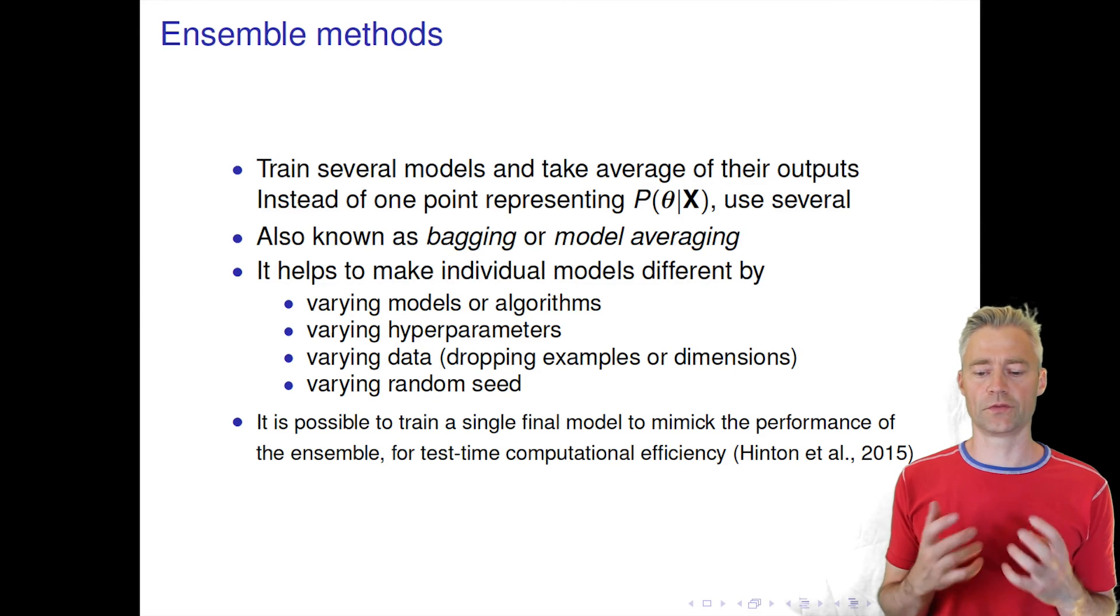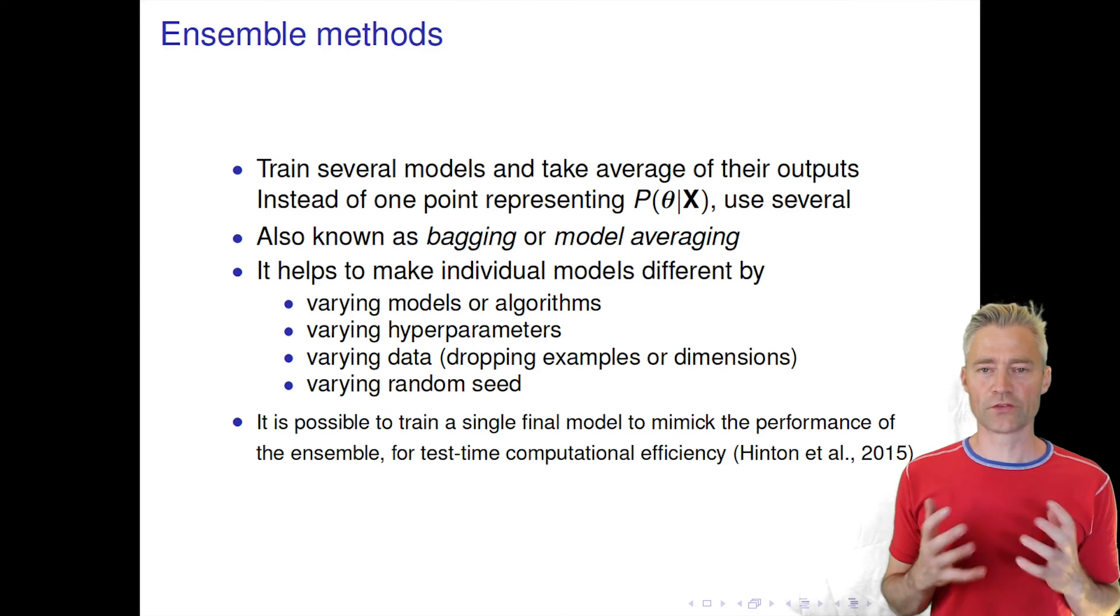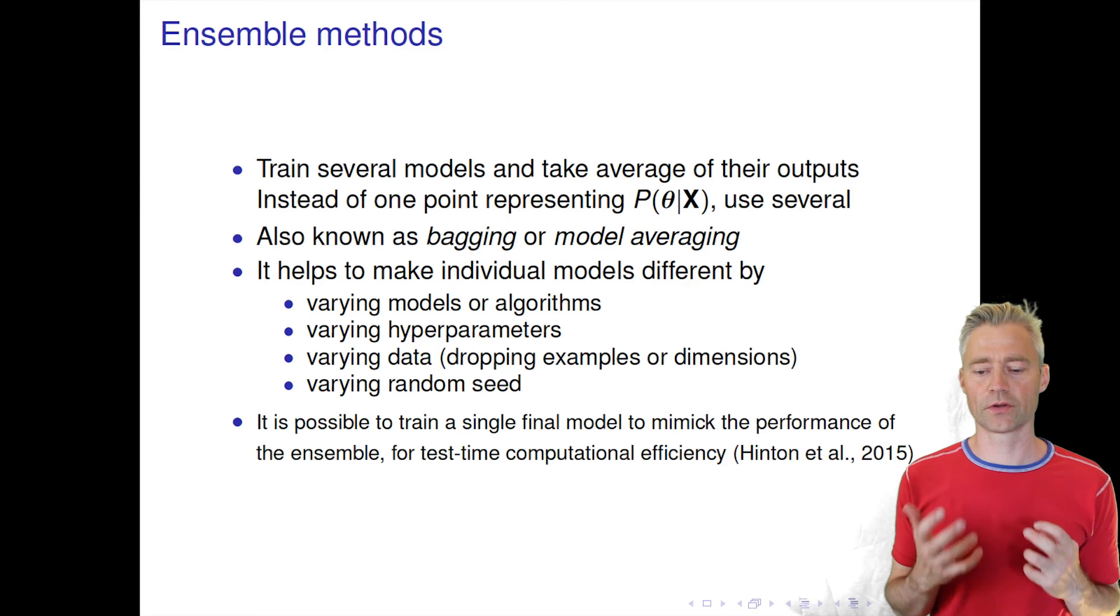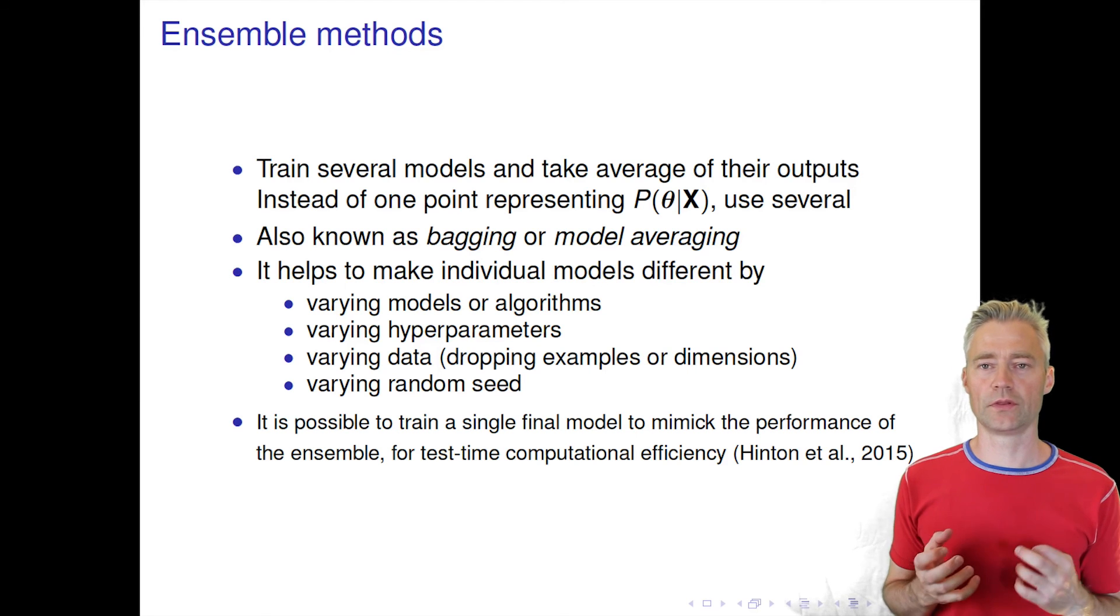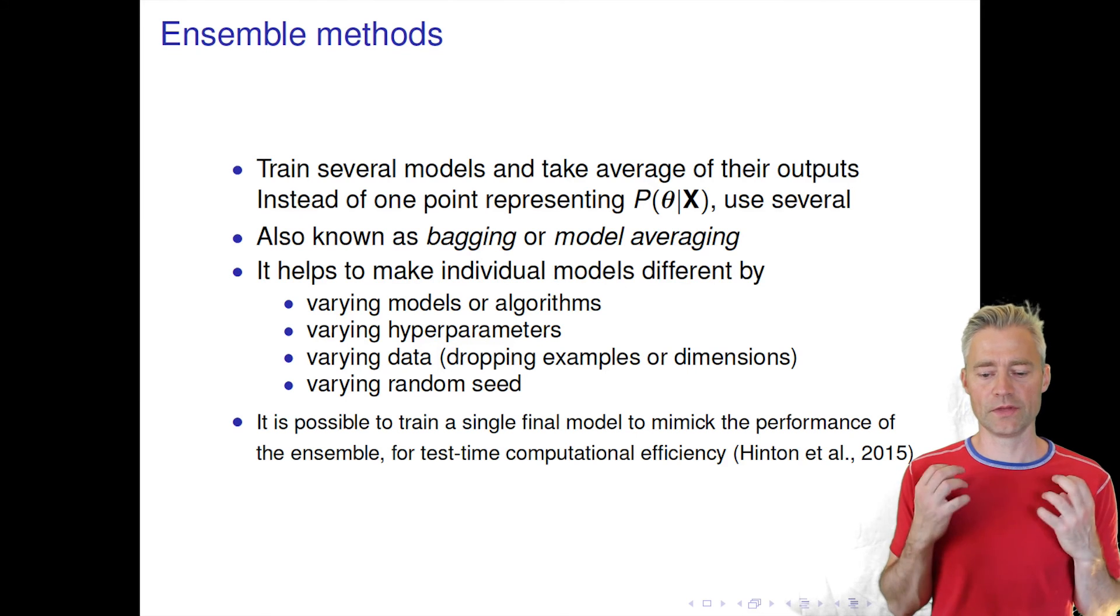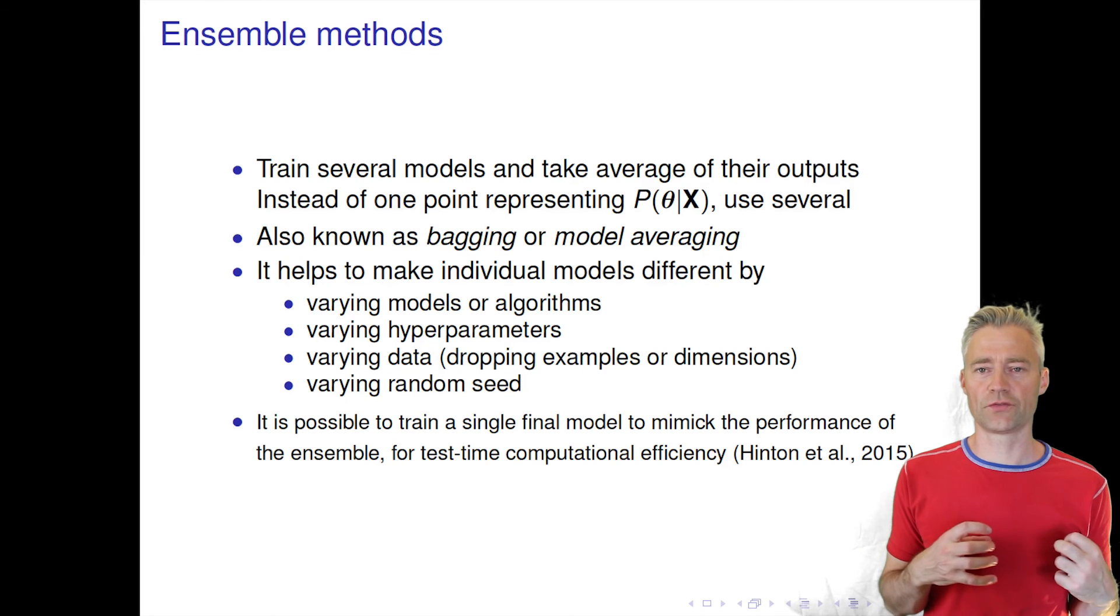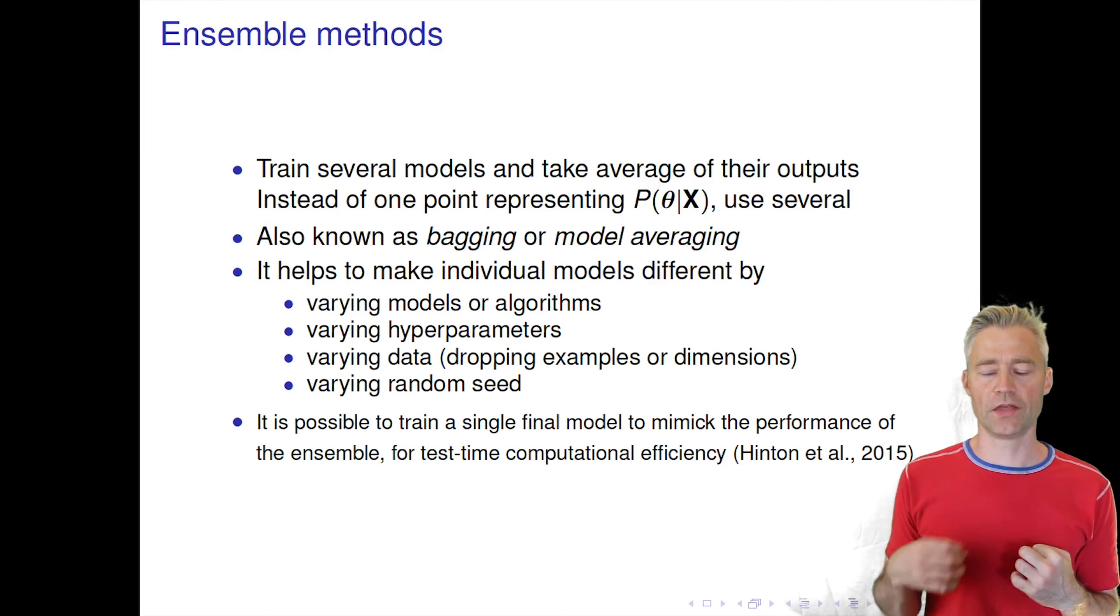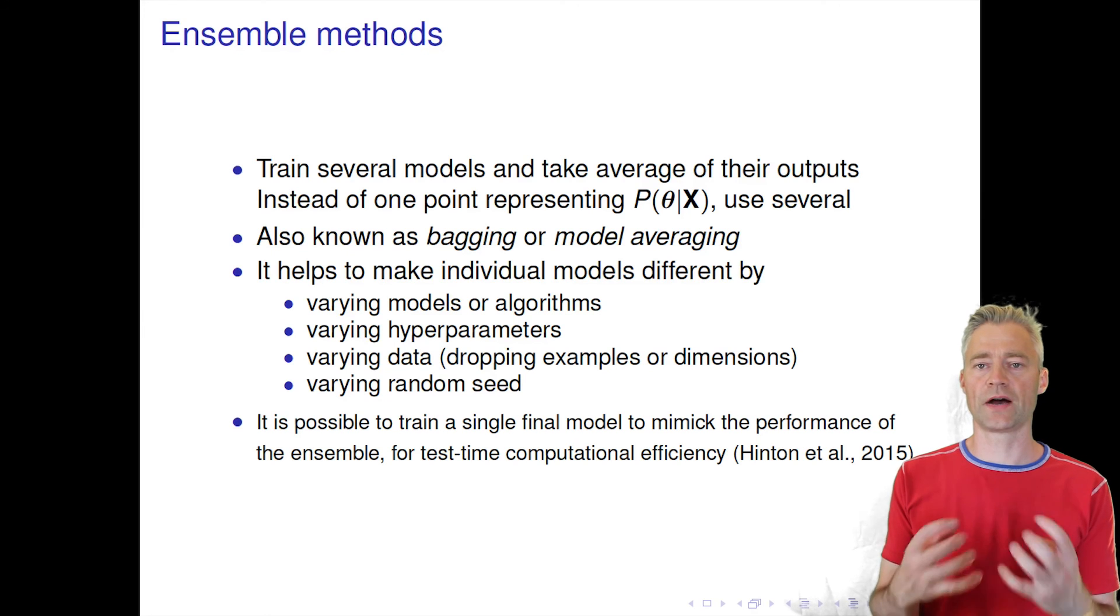There's also something called dark knowledge—dark knowledge is a name that Hinton has given it. It's not only Hinton who has proposed this. The idea is that once you have trained an ensemble, then you can actually use the ensemble prediction as a new target and train a new simpler model to mimic the ensemble. That way you get a model that is very fast at predicting.